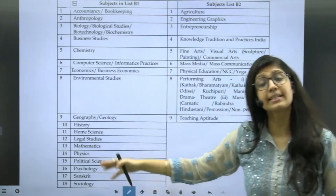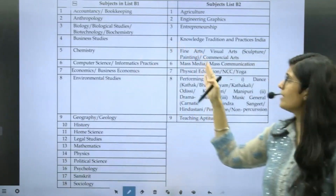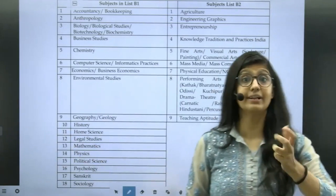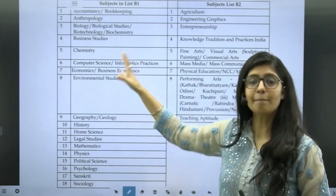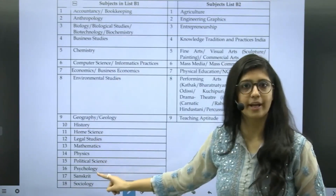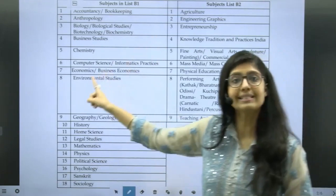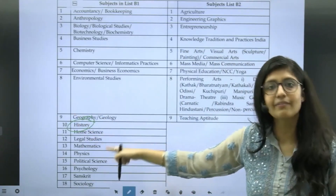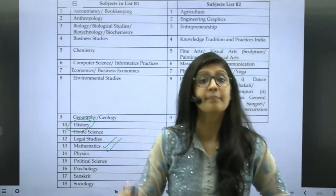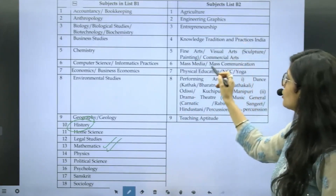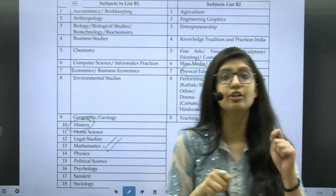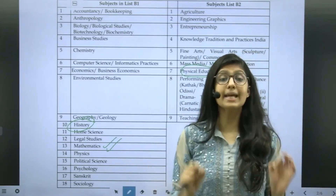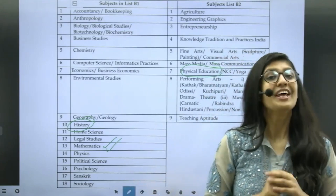B1 incorporates all the core subjects that you might have in your 12th grade, and B2 incorporates subjects like Physical Education and Entrepreneurship. So if you have Physical Education in your 12th grade as your 6th subject, you can choose one subject from B1 apart from Maths — Maths is compulsory. Apart from Maths, you can choose one subject from B1; say, if you are from Humanities background, you choose History. So you have History from B1, Maths is compulsory, and you can choose Physical Education — but you should have Physical Education in your 12th grade. This is the eligibility criteria to pursue B.Sc. Honours in Statistics from University of Delhi.